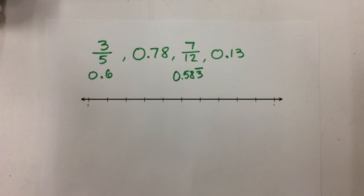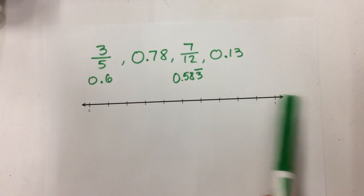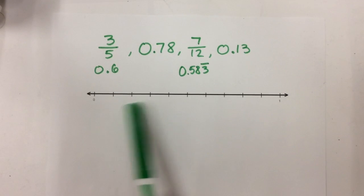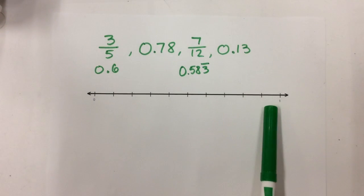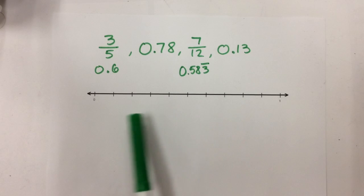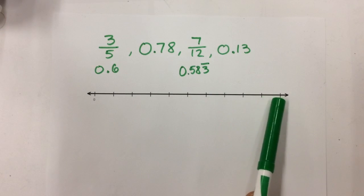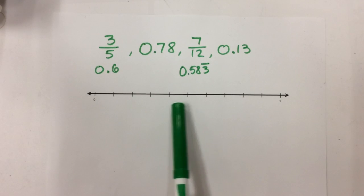Now that my fractions are converted, I don't need the calculator anymore, and I am going to put them on the number line. I have a blank number line that starts at 0 and ends at 1. I need to pay attention to where it starts and where it ends so I can put my numbers in the correct place. I've got a bunch of empty dashes here, and what I need to do is figure out what each of these dashes represents.